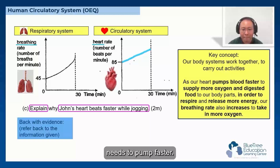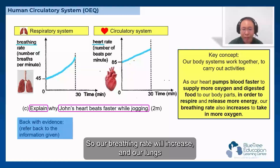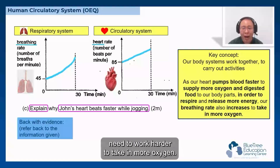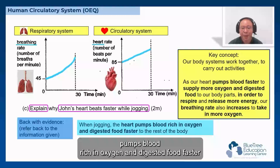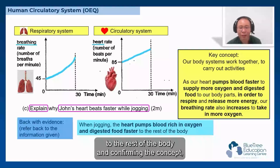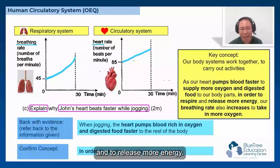Back with evidence: referring to the diagram, our heart rate increases, meaning our heart needs to pump faster. At the same time, our respiratory system needs to take in more oxygen, so our breathing rate increases and our lungs need to work harder. When jogging, the heart pumps blood rich in oxygen and digested food faster to the rest of the body — confirming the concept — in order to respire and release more energy.